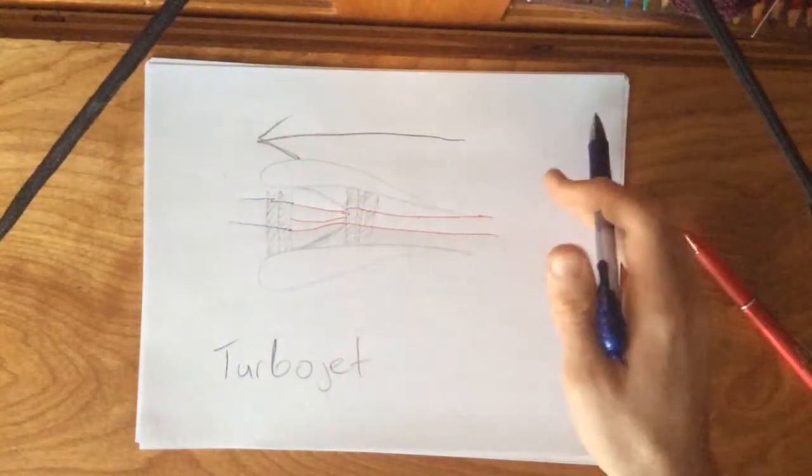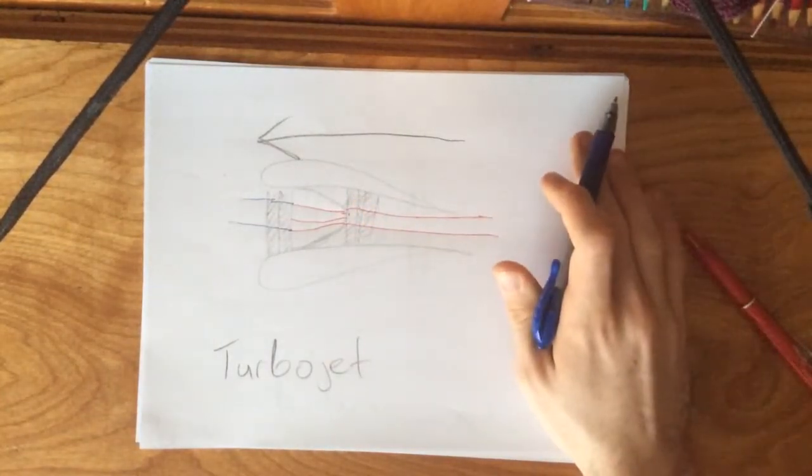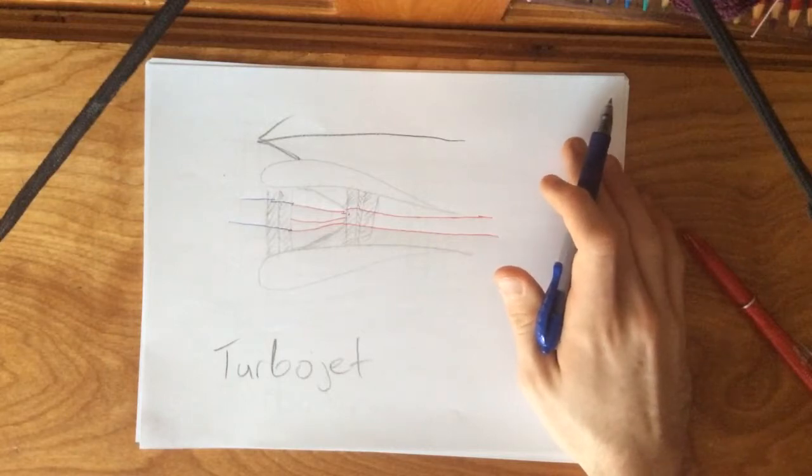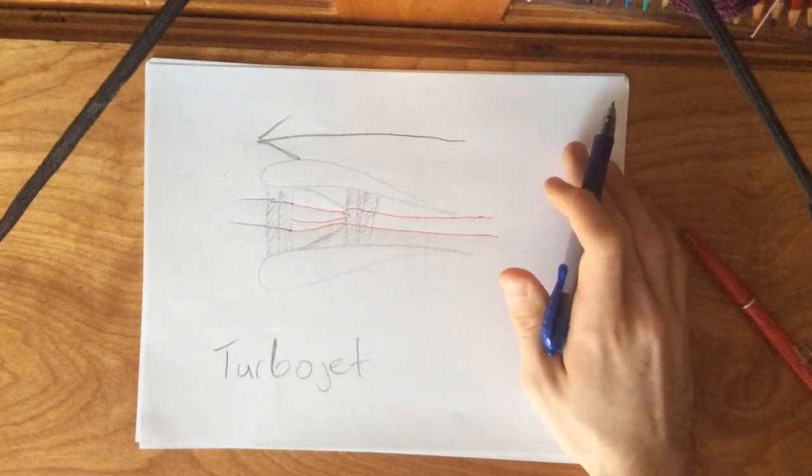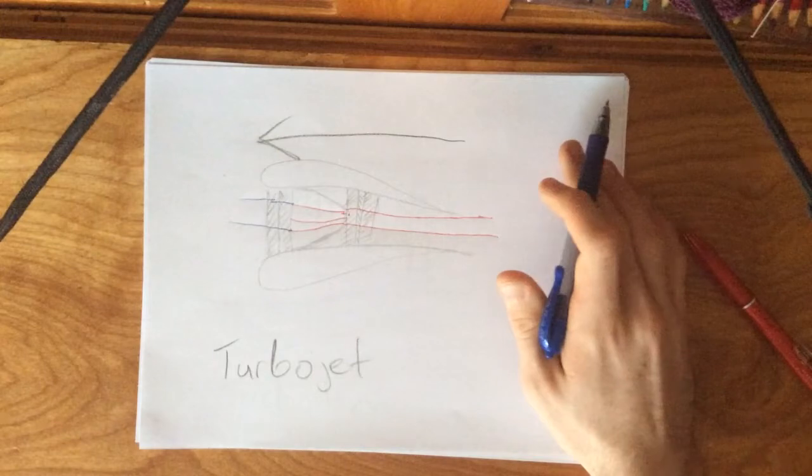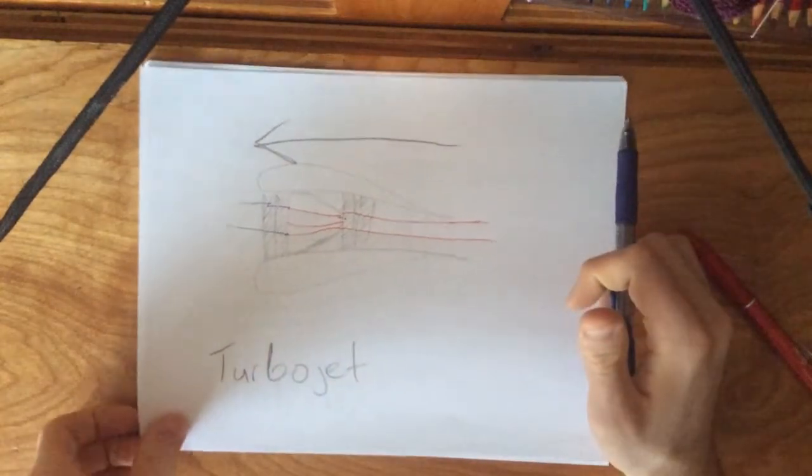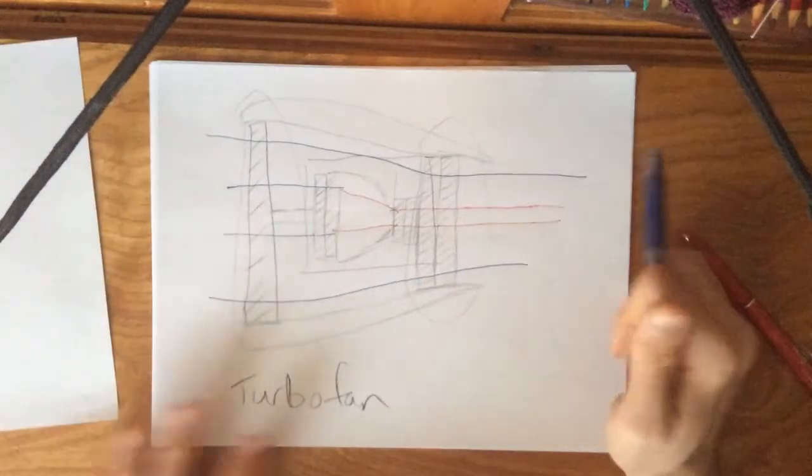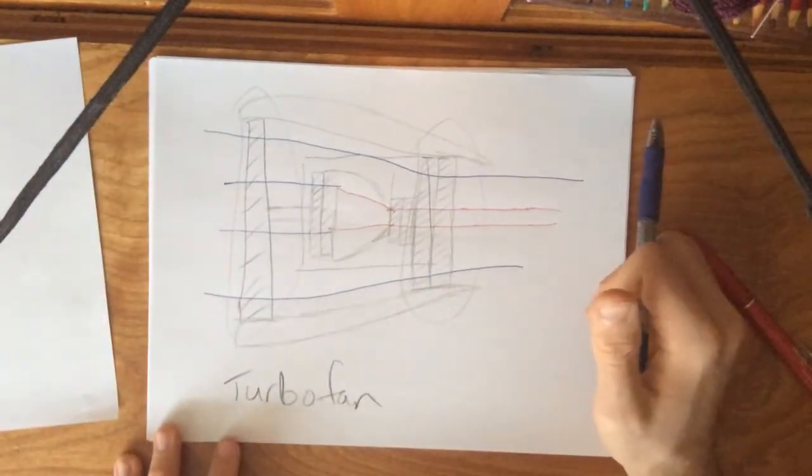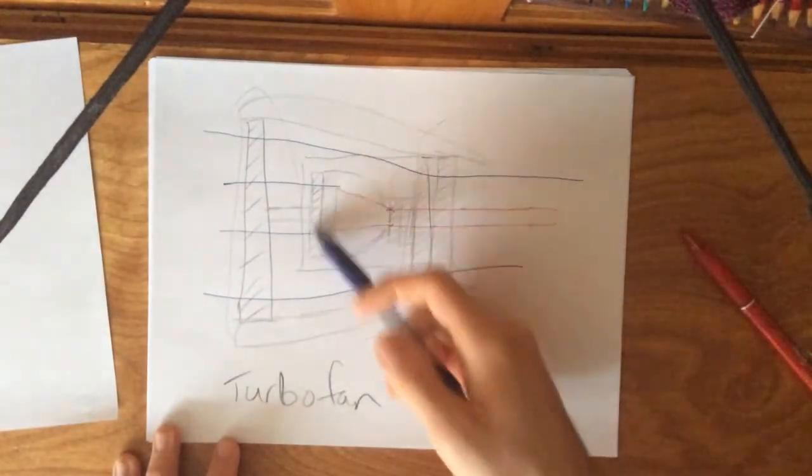of the system—it decreases the thrust coming out, but at the same time, it makes it more fuel efficient. That's how the turbojet works. The turbofan is kind of the same thing; it has the exact same system here in the middle